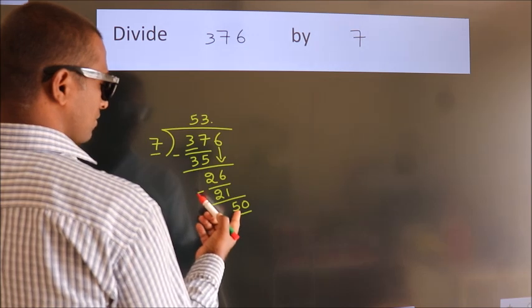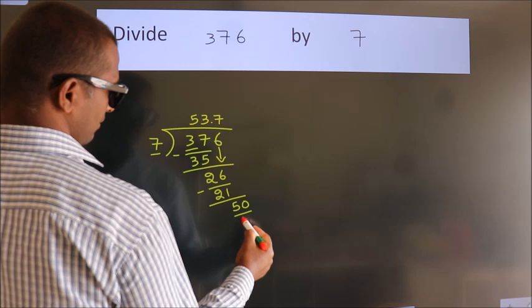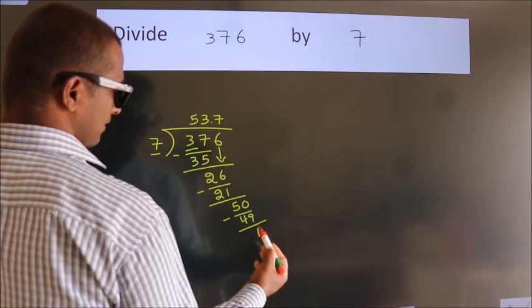A number close to 50 in the 7 table is 7 sevens, 49. Now we subtract. We get 1.